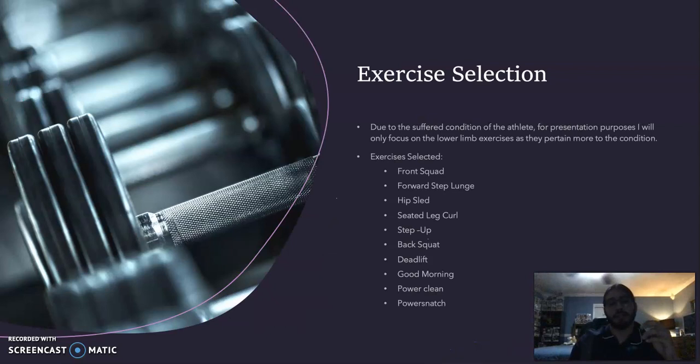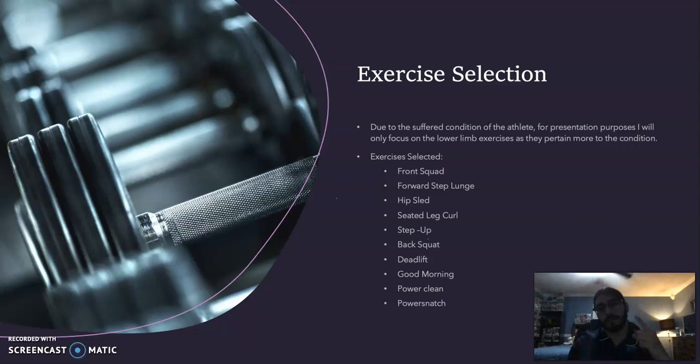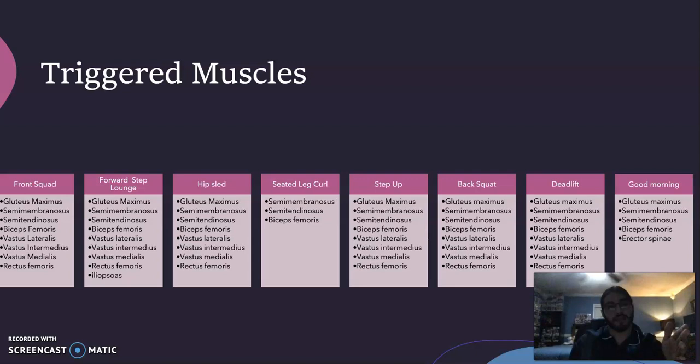Due to the athlete's condition, for presentation purposes I will only focus on lower limb exercises as they pertain most to the condition. The exercises selected for the lower limbs are the front squat, forward step lunge, hip sled, seated leg curl, step-up, back squat, deadlift, good morning, power clean, and power snatch. This slide shows some of the triggered muscles within each exercise.